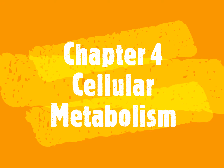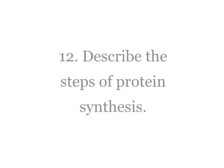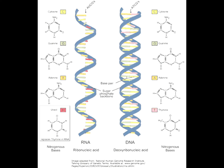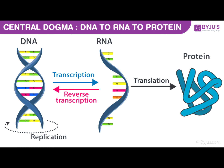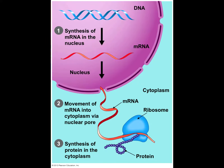Today we're talking about chapter 4, cellular metabolism. We have five steps of protein synthesis. Step one: one side of the DNA strand is copied to make mRNA. Step two: mRNA moves to the cytoplasm.